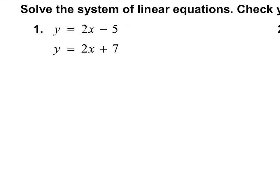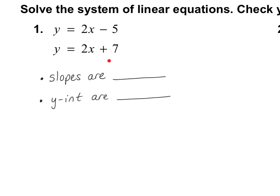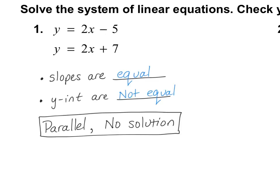Now take a look at number 1. Both equations are already written in slope-intercept form, so I do not need to change them. Look at the two lines: see if the slopes are equal or not, and if the y-intercepts are equal or not, and decide if they are no solution because they are parallel, or if they have infinite solutions because they are the same line. Pause the video and find the answer. Hopefully you found that the slopes were equal but the y-intercepts were not equal — that means the lines are parallel and there is no solution.